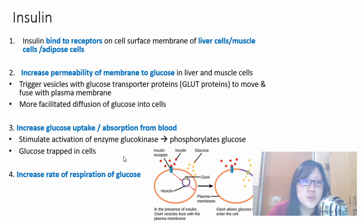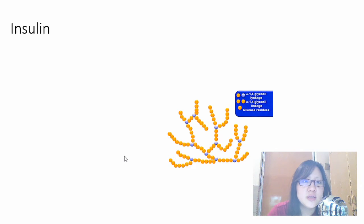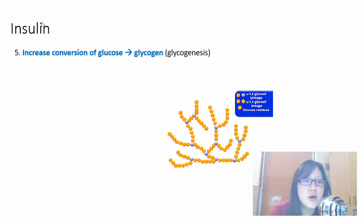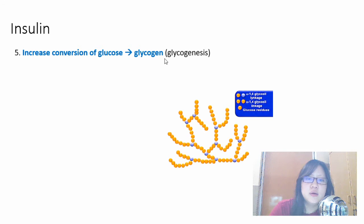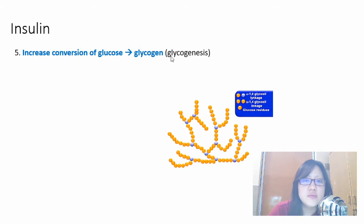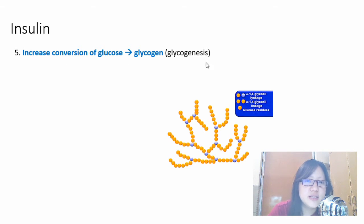To further decrease blood glucose concentration, glucose is converted into glycogen — this process is called glycogenesis. 'Glyco' refers to glycogen, and '-genesis' means creation or formation. Two enzymes are involved: phosphofructokinase and glycogen synthase. Glycogen is a storage molecule in liver and muscle cells, and when glucose is needed again, it can be hydrolyzed back to glucose.